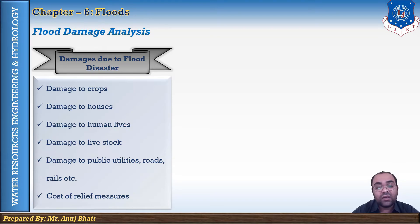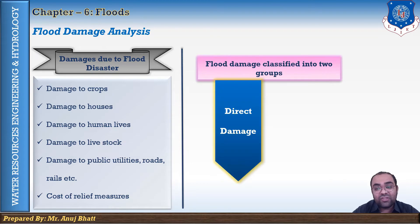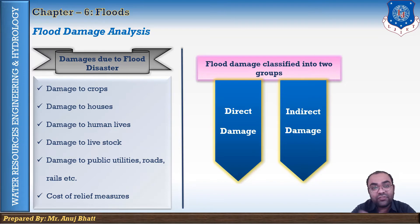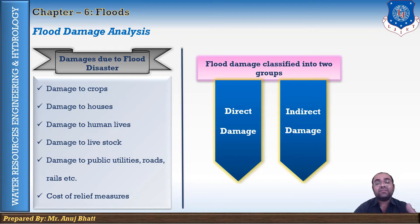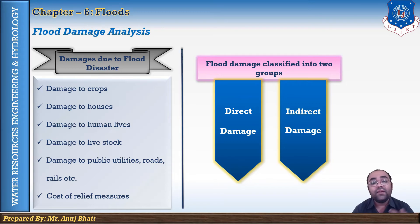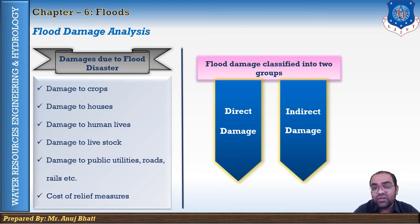Direct damage results from physical contact with flood water. Examples include damage to crops, damage to houses, loss of life, and damage to public utilities like roads, bridges, and railways — all of which are directly in contact with flood water when flooding occurs. These are considered direct damages.